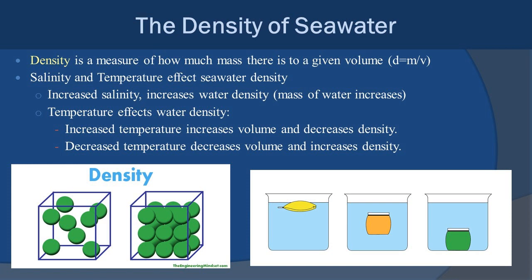Oppositely, if you decrease the temperature, you decrease the volume and thus increase the density. In the diagram, you'll see three beakers: the left beaker has a yellow bag floating on top, the right beaker has a green bag settled on the bottom, and the middle beaker has an orange bag nearly neutrally buoyant in the middle. You could say the yellow bag is full of warm fresh water, and the green bag is cold salty water. Density differences cause water masses to move up or down in the water column.